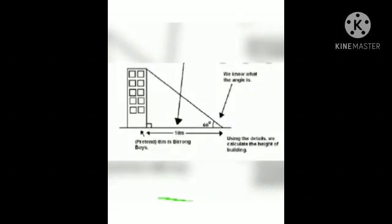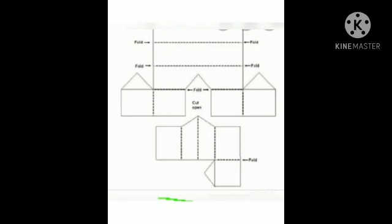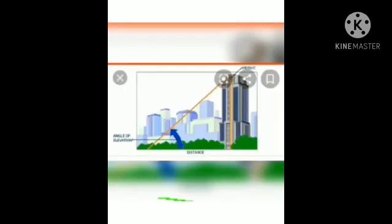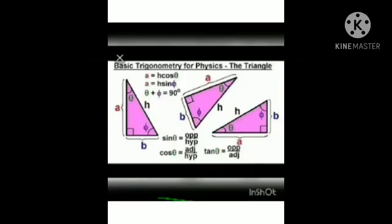Trigonometry in construction: measuring fields, lots, and areas; making walls parallel and perpendicular; installing ceramic tiles; roof inclination; the height and width of buildings — and many other things where it becomes necessary to use trigonometry. Architects use trigonometry to calculate structural loads, roof slopes, ground surfaces, and many other aspects including sun shading and light angles.